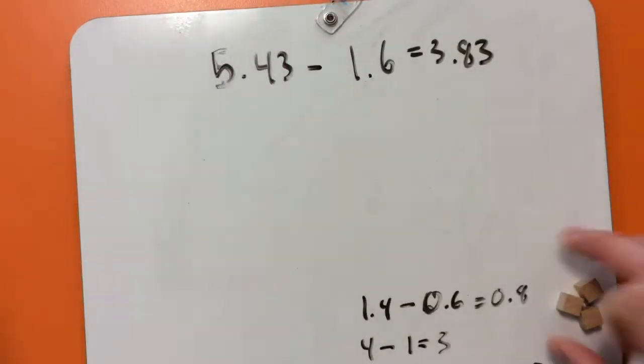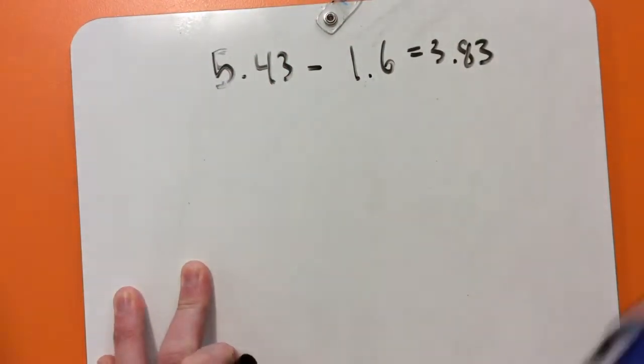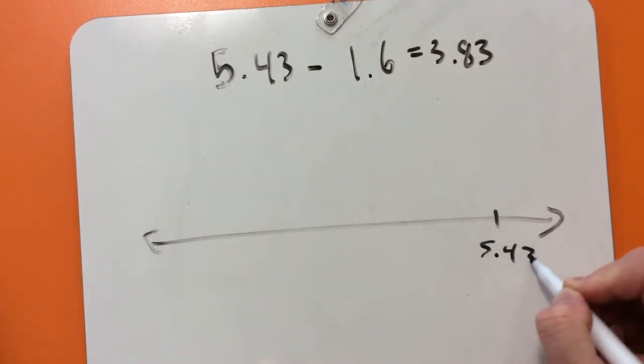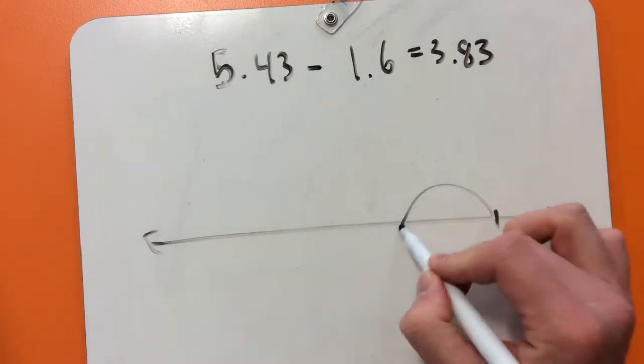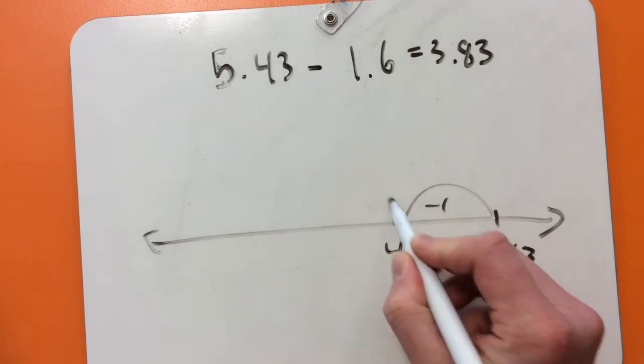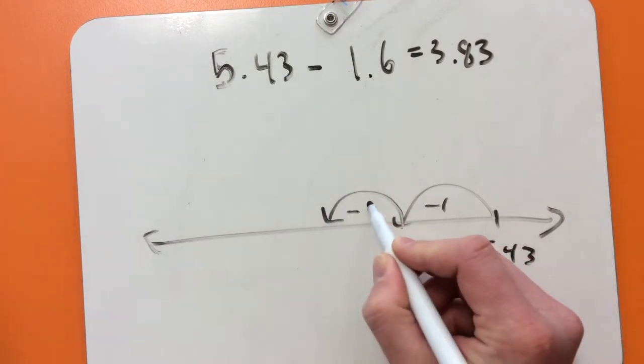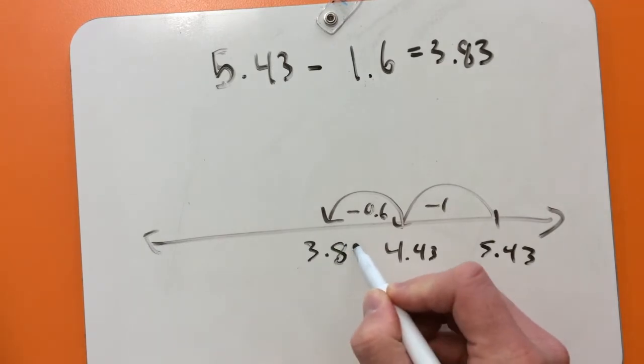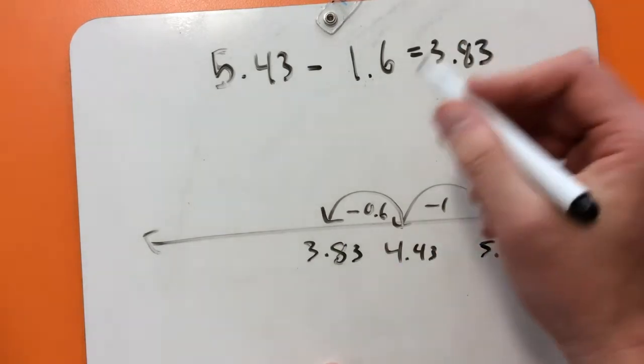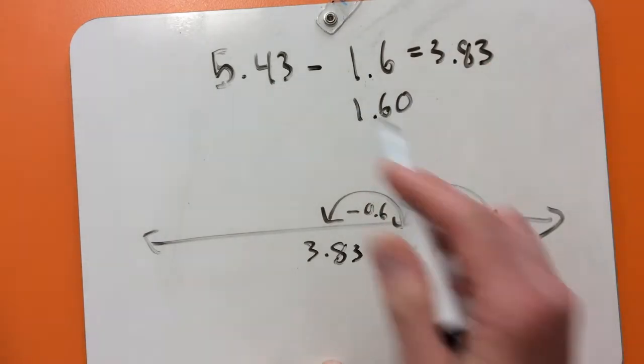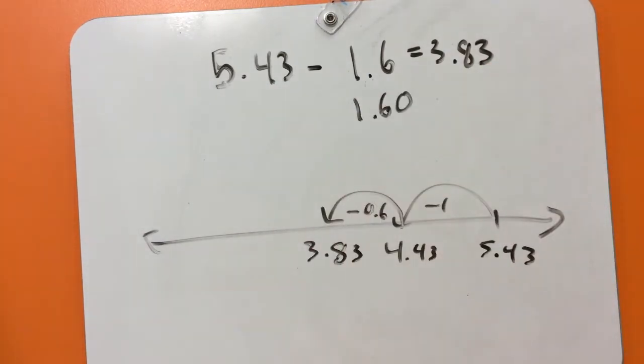So I'll just move those out of the way, and do it again with the number line. So we start at 5.43, and we're going to take away minus 1, and that becomes 4.43. Then we're going to take away our 0.6, and that becomes 3.83. If it's easier for you, instead of writing 1.6, you could write 1.60. So they have the same things, and then it makes a little bit more sense to do it that way.